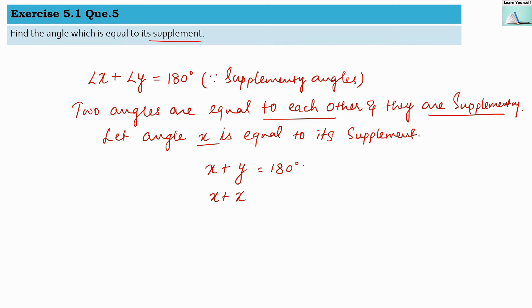Since both angles are equal, we can add them: 2x = 180°. Therefore, x = 180° divided by 2.